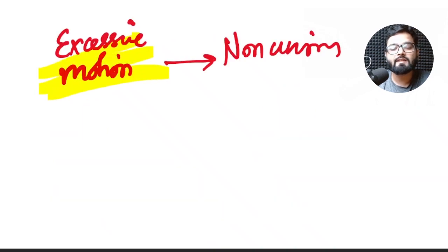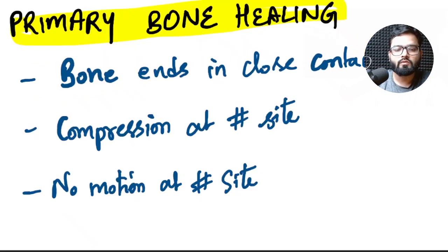If there will be excessive motion at the fracture site then the fracture will not unite and it will cause a non-union. So we will discuss the primary bone healing.